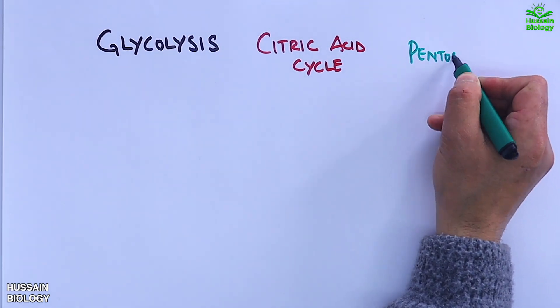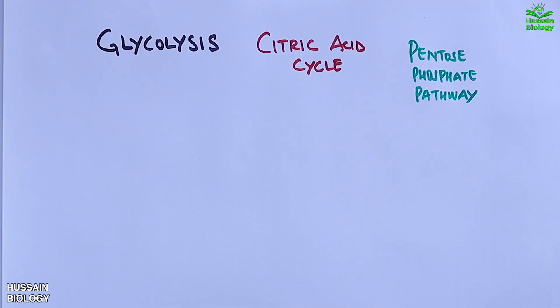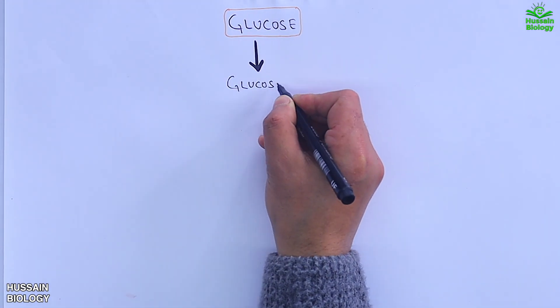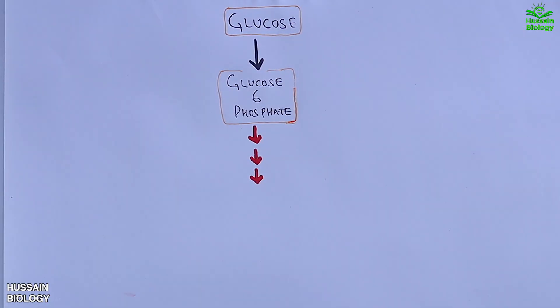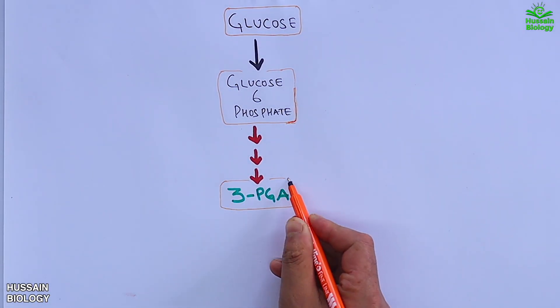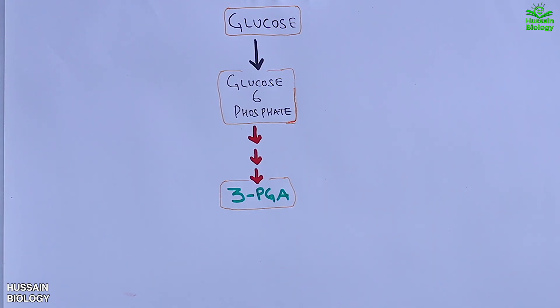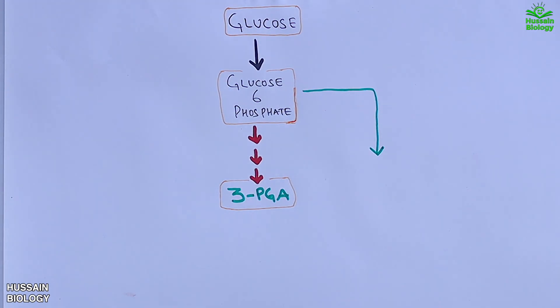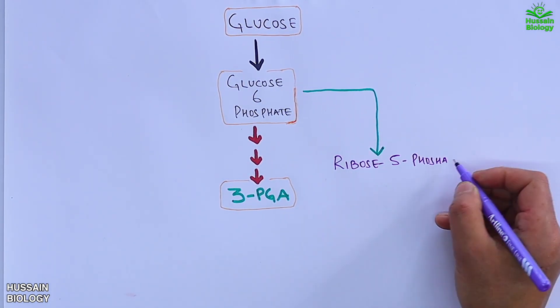There are three primary pathways from which we get non-essential amino acid biosynthesis: glycolysis, the citric acid cycle, and the pentose phosphate pathway. Starting with the glucose molecule, it is driven into glycolysis — first we get glucose-6-phosphate, and then 3-PGA (3-phosphoglyceric acid). Glucose-6-phosphate can also enter the pentose phosphate pathway and gets converted into ribose-5-phosphate.